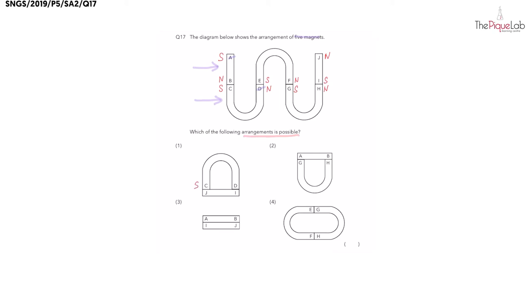C was south, J was north, D was north, and I was south. So do we have two unlike poles facing each other causing the magnet to attract? Yes. So we know that one is probably our answer, but let's check the other options just to be sure.